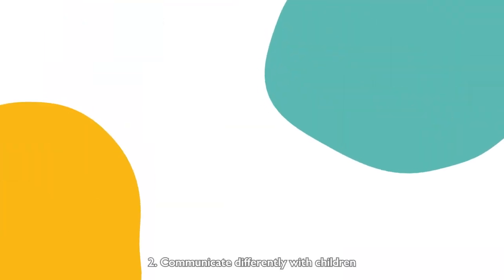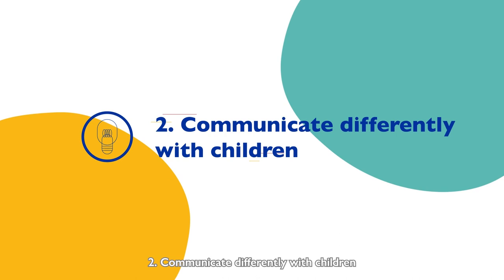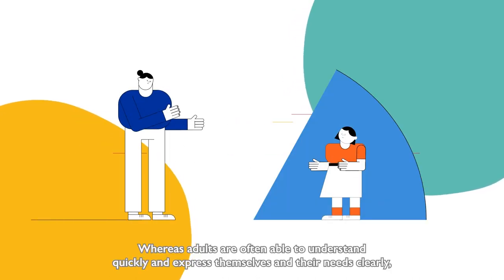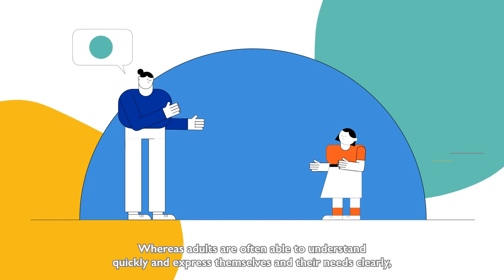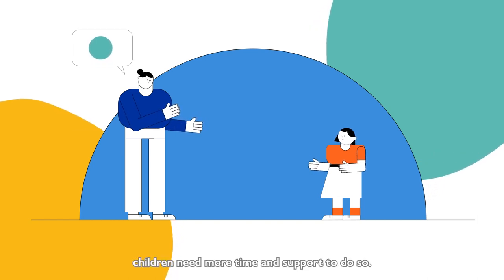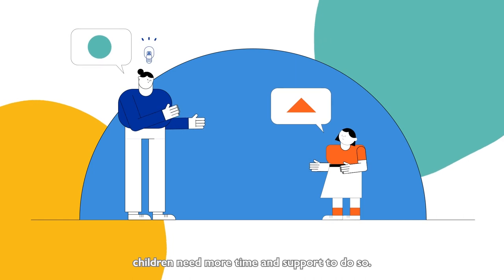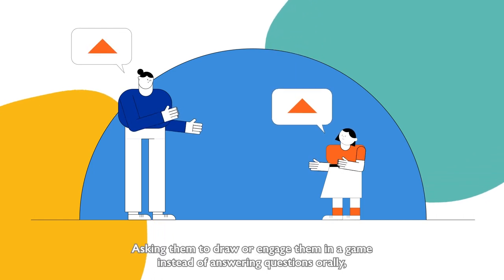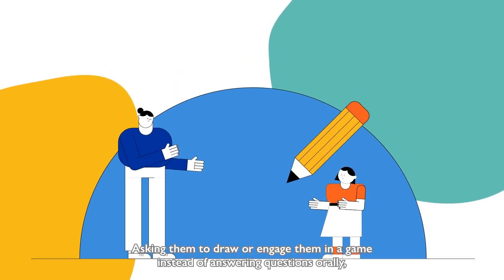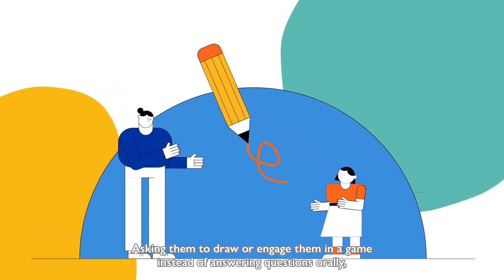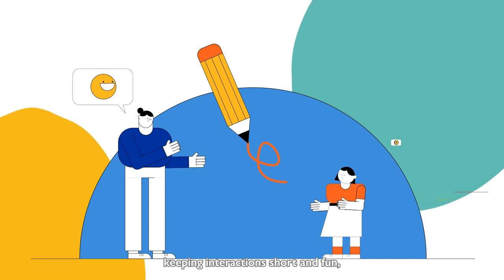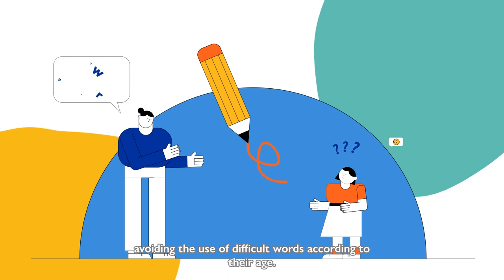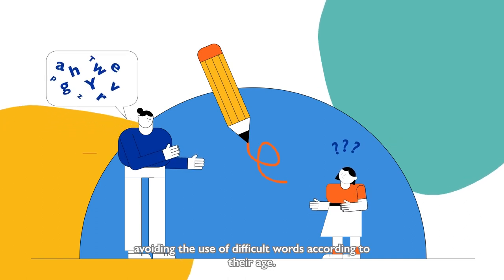2. Communicate differently with children. Whereas adults are often able to understand quickly and express themselves and their needs clearly, children need more time and support to do so. Communicating with children could involve, for example, asking them to draw or engage them in a game, instead of answering questions orally. Keep interactions short and fun, and avoid the use of difficult words according to their age.